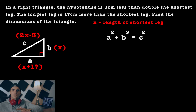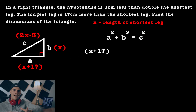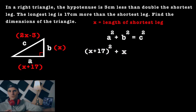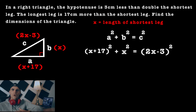Now we can take these expressions and plug them into the Pythagorean theorem formula. For the a value, we plug in x plus 17, so that goes in brackets and gets squared. The b value is the shortest leg, just x, so we get x squared. And the hypotenuse c is 2x minus 3, so we get 2x minus 3, all squared.